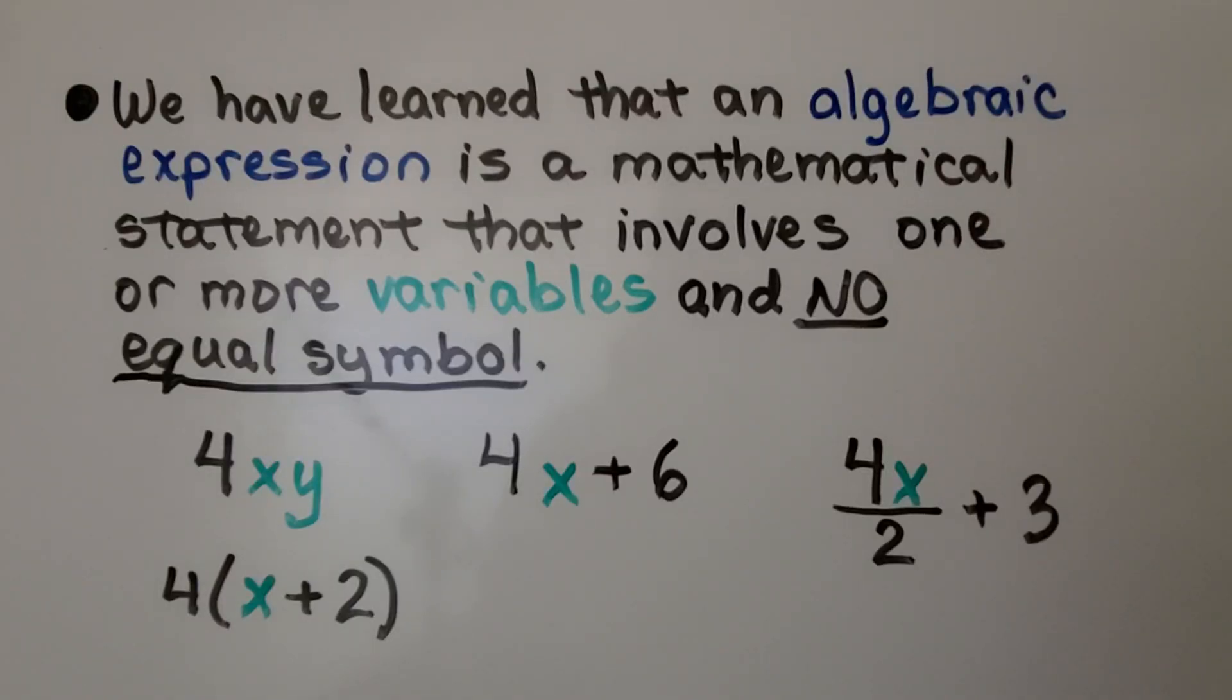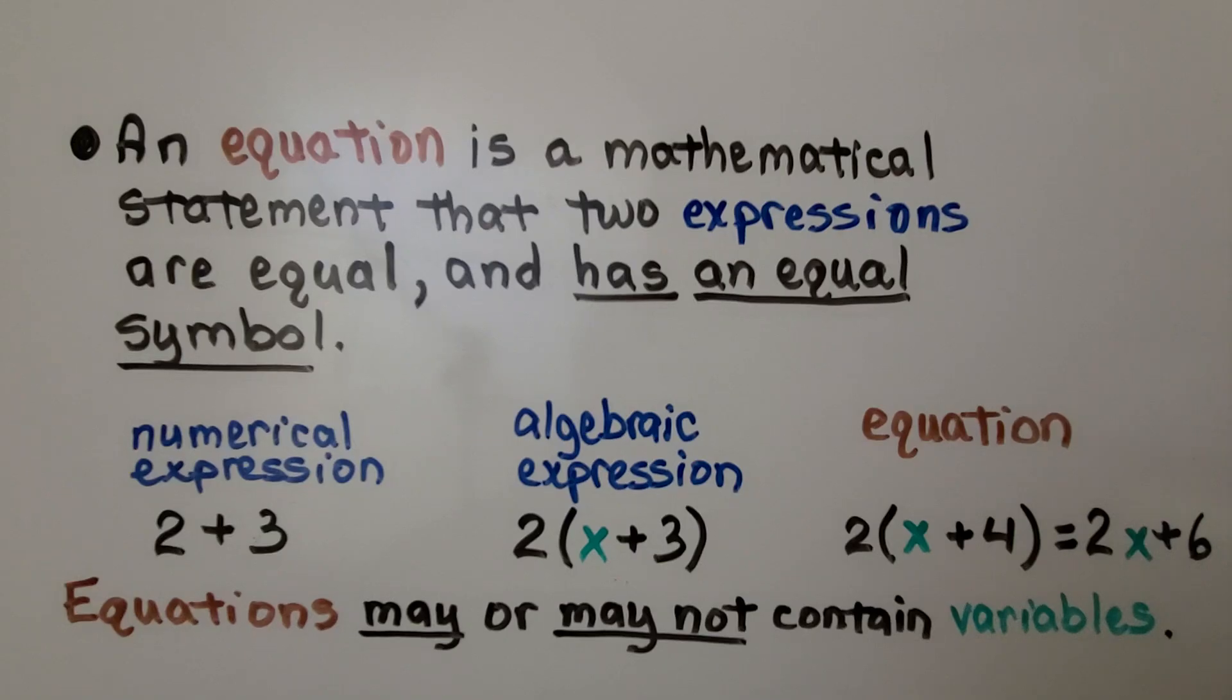We've learned that an algebraic expression is a mathematical statement that involves one or more variables and no equal symbol. An equation is a mathematical statement that two expressions are equal and has an equal symbol.